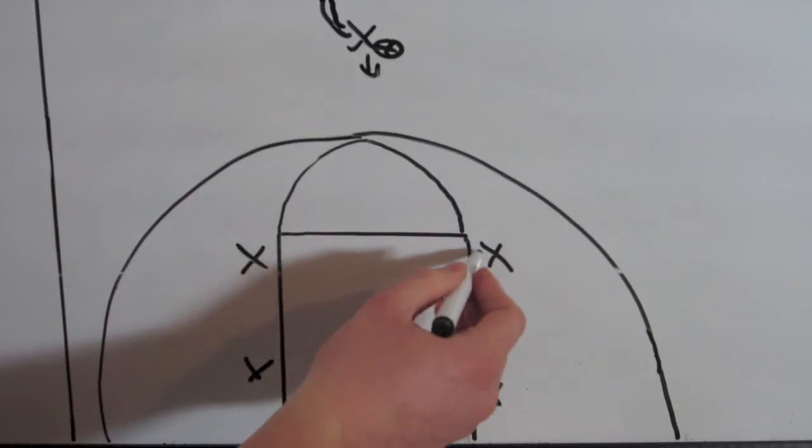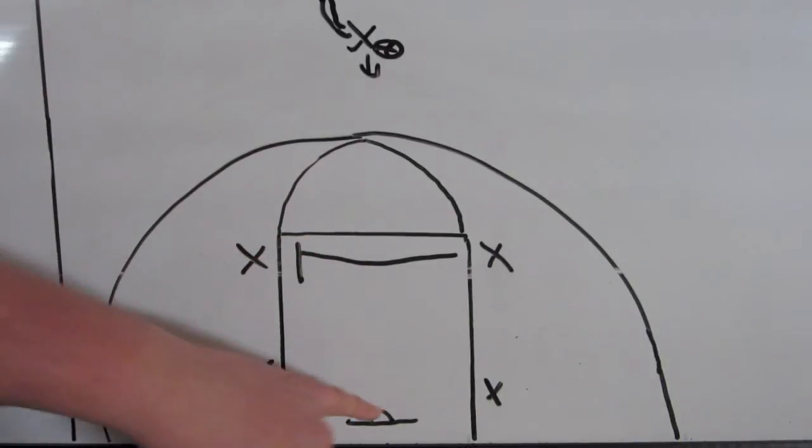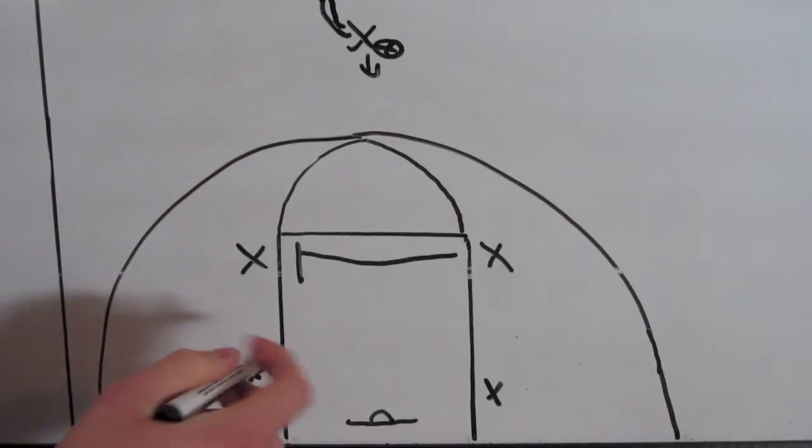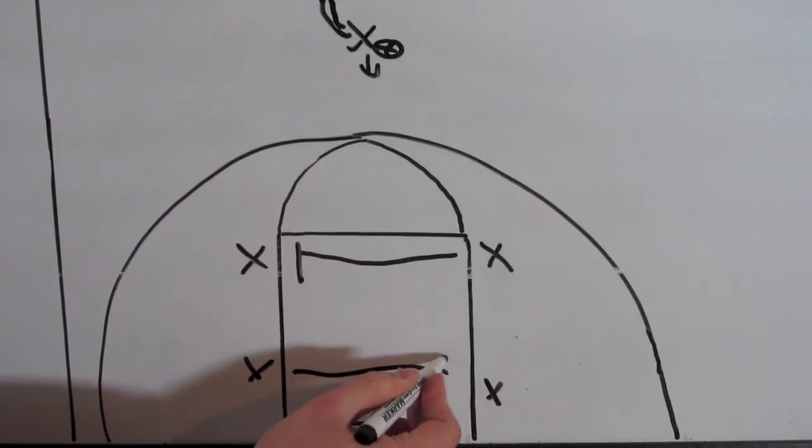What's going to happen is this man right here is going to cross and set a screen. And when these lower post players see that happening, they need to cross in the opposite direction. So this man has to cross this way.